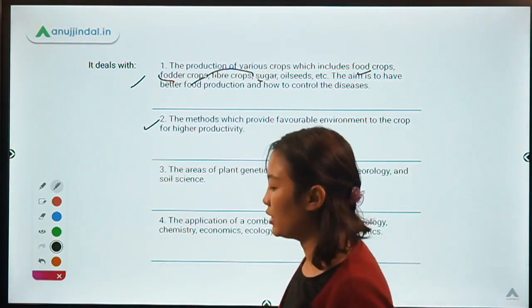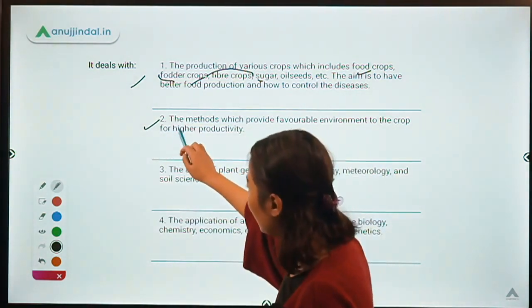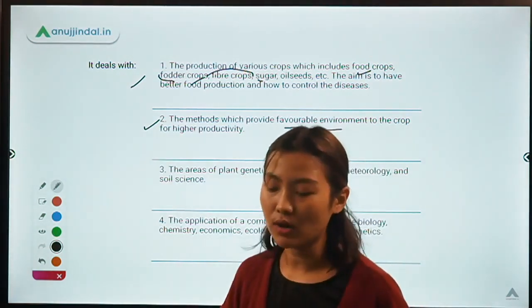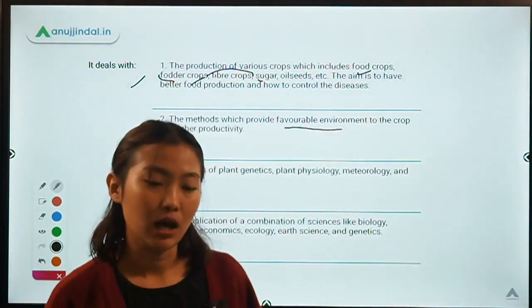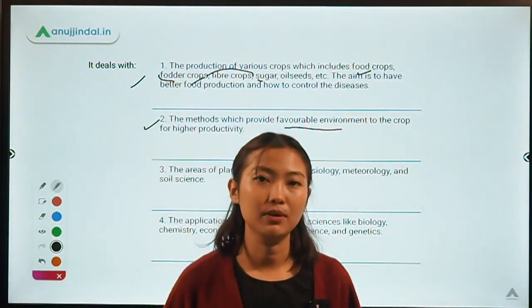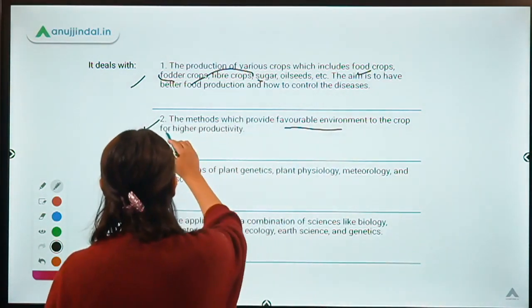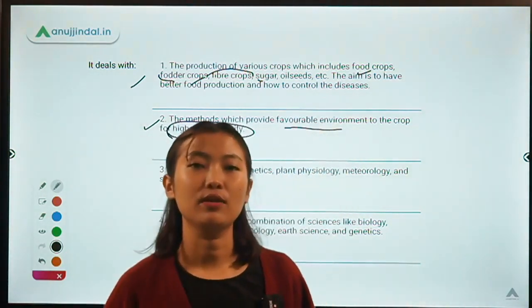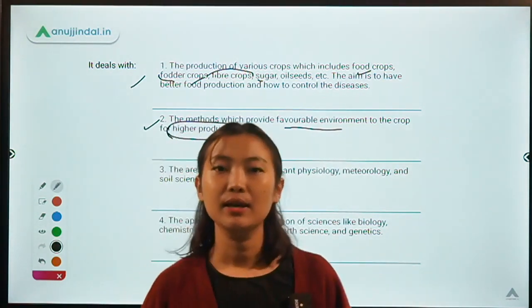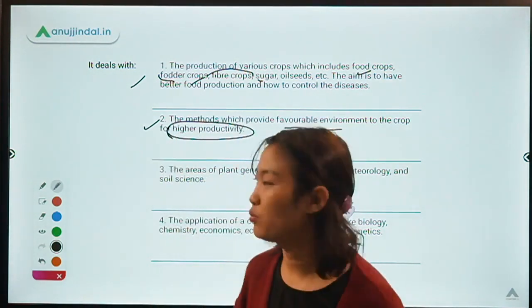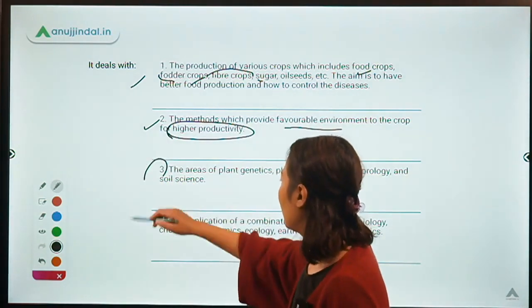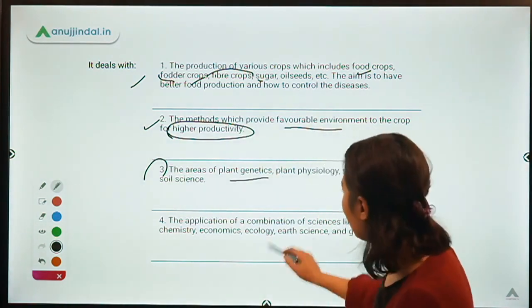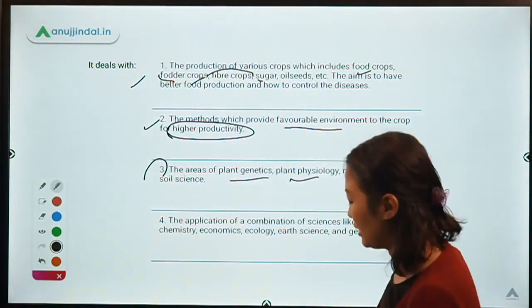Coming to the methods of agronomy: the methods of agronomy provide a favorable environment to the crop. It's all about production — how much a person can increase production with minimum input. The main aim of an agronomist is to get higher productivity by managing the soil properly. Agronomy also deals with the areas of plant genetics, plant physiology, meteorology, and soil science.